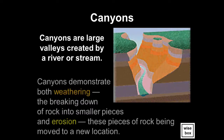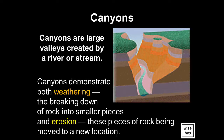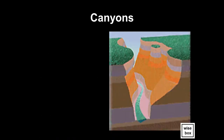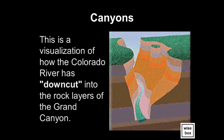Canyons are large valleys created by a river or stream. Canyons demonstrate both weathering — the breaking down of rock into smaller pieces — and erosion — these pieces of rock being moved to a new location. This is a visualization of how the Colorado River has cut down into the rock layers of the Grand Canyon.